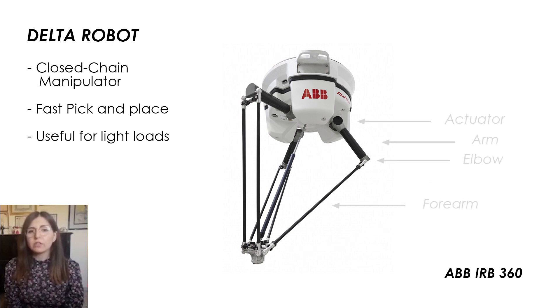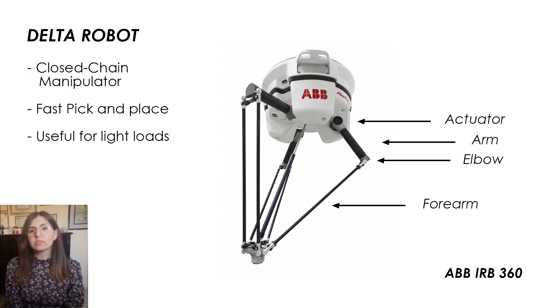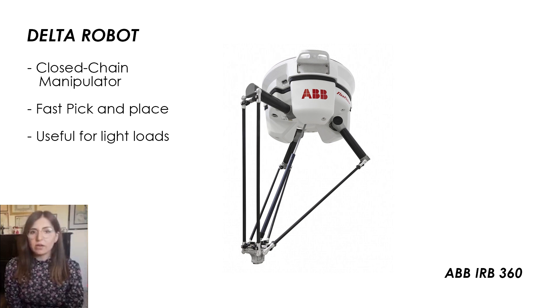The main advantage of a Delta Robot is its speed since the only moving part is its frame made of lightweight composite materials. Due to their speed, Delta Robots are widely used in pick and place operations of relatively lightweight objects.